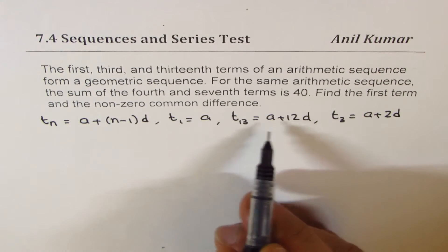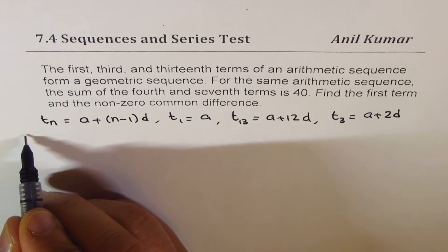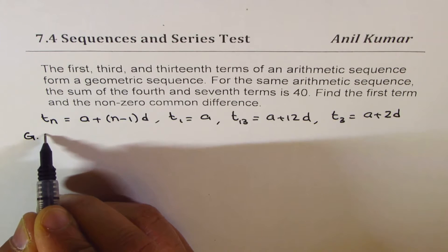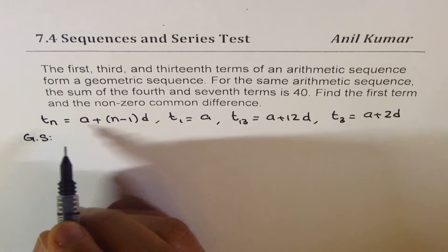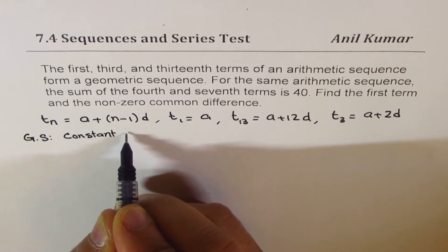So basically the first, third, and thirteenth terms are in geometric sequence. When we say that the terms are in geometric sequence, that means they have constant ratio.